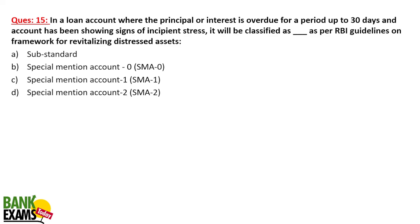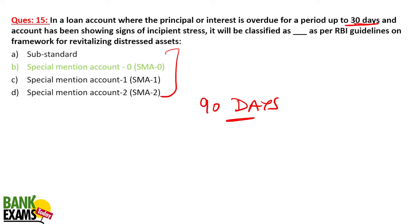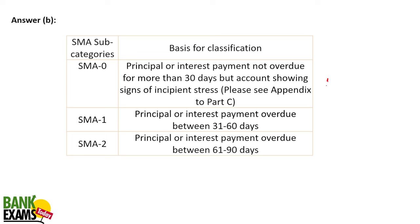For big loans, RBI says there is no need to wait 90 days — there is SMA (Special Mention Account) categorization. Even before 90 days, defaulting accounts must be disclosed. For up to 30 days overdue: SMA-0. For 31 to 60 days: SMA-1. For 61 to 90 days: SMA-2. After that, it is an NPA.